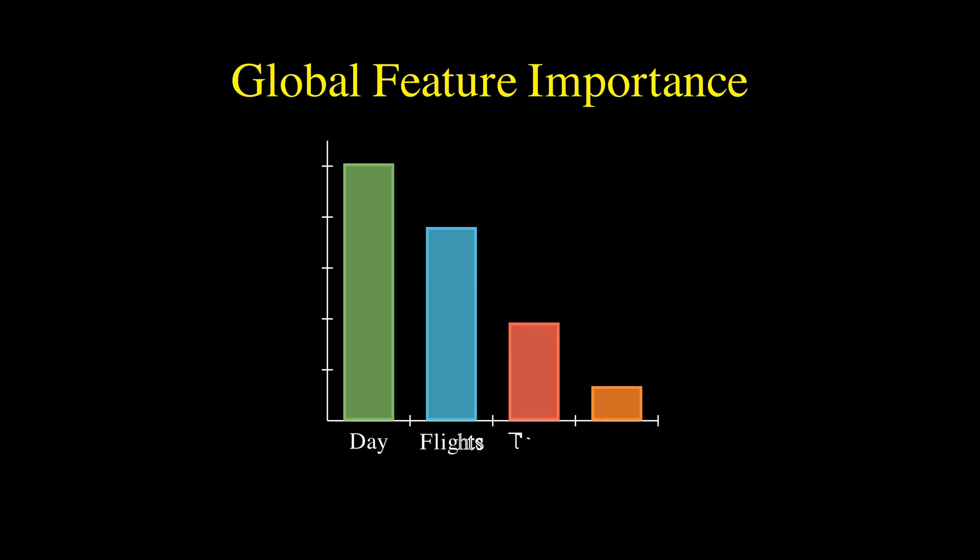Finally, by aggregating these values across many different days in your dataset, we can determine the global importance of each feature. We might find that the day of the week is actually the strongest driver of your sales, followed by flights, with temperature playing a smaller role than expected. This model agnostic framework allows us to peek inside the black box and understand the why behind any prediction.